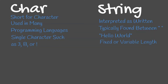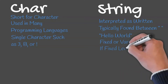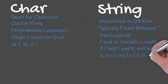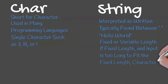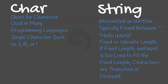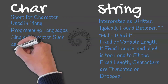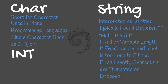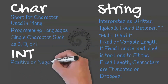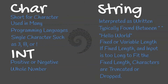The length of a string can be variable or fixed. If a string is fixed length and the input is too long, characters will be truncated or dropped, typically from right to left. This is known as truncation. An integer, represented by the int function in many programming languages, is a positive or negative whole number.